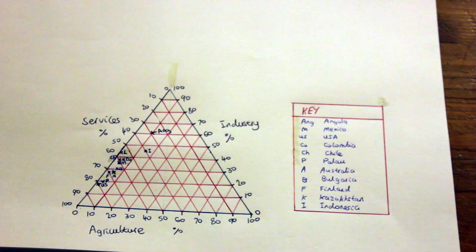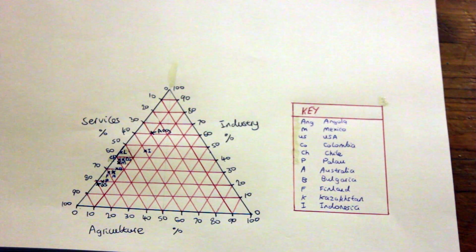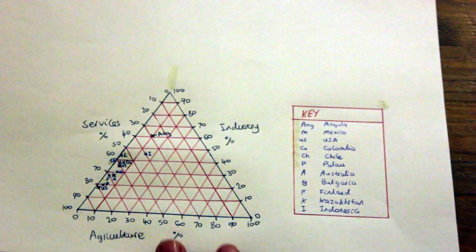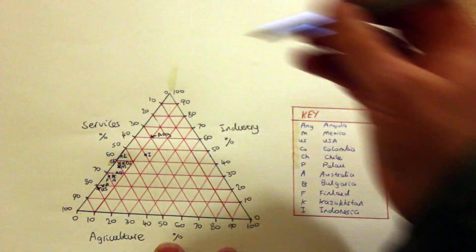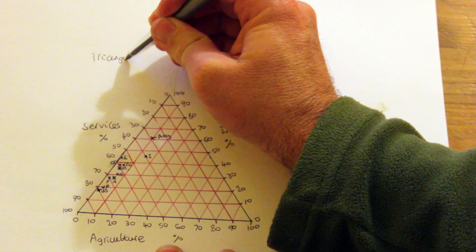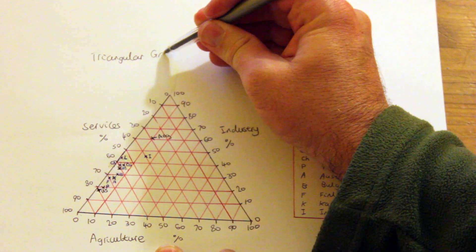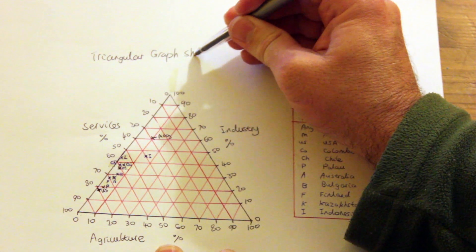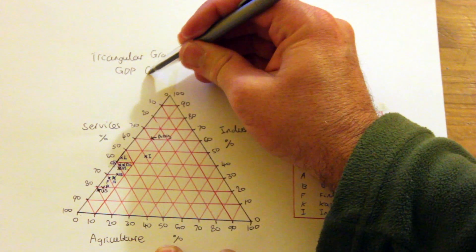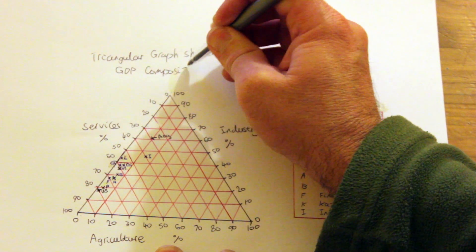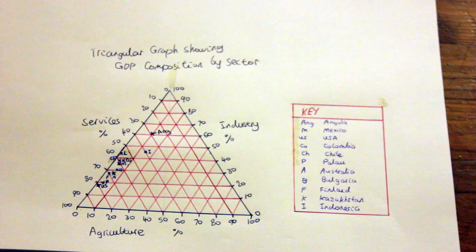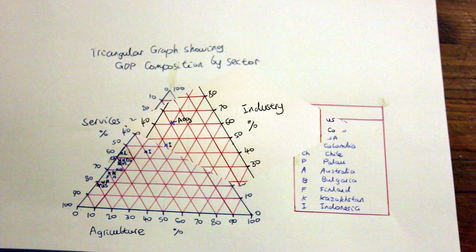Now I've almost finished my graph and I've added a key on the right hand side. And now I'm going to give it an appropriate title. We're going to call this a triangular graph showing GDP composition by sector. Now here is my completed graph.